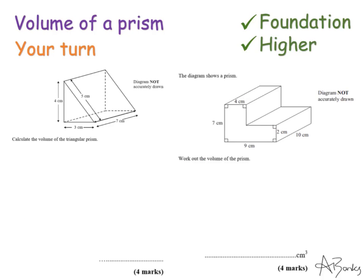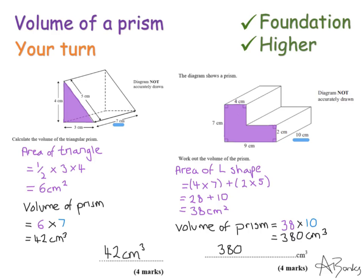Here are two similar questions for you to try — pause the video and unpause when you're ready to see the solutions. In the first one, the area of the triangle is 6 centimetres squared, so the volume of the prism is 6 times 7, which is 42. They didn't give units on the answer line, so make sure you write centimetres cubed. In the second example, I split the shape going down: 4 times 7 plus 2 times 5. The area of the cross-section is 38, so the volume is 38 times 10, which is 380 centimetres cubed.